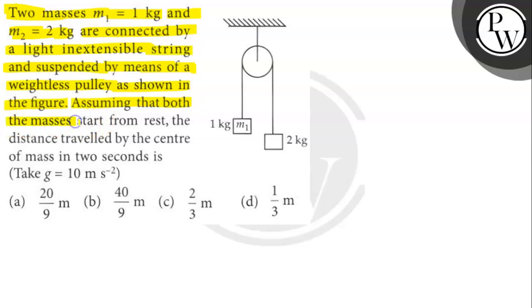Assuming that both the masses start from rest, the distance travelled by the centre of mass in 2 seconds is how much? Let's find out. Here, g is given as 10 meters per second squared.